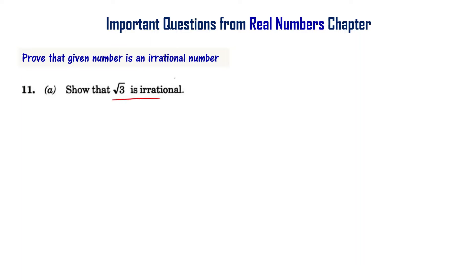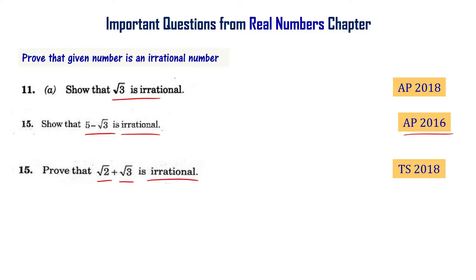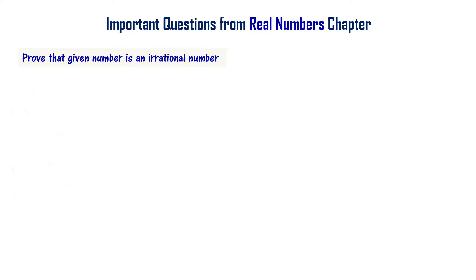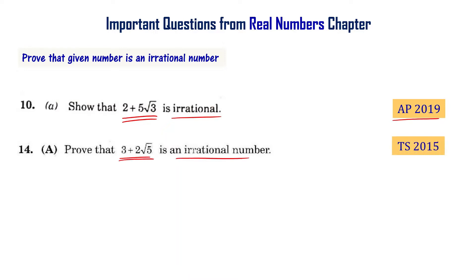Show that root 3 is irrational — AP final exam 2018. Show that 5 minus root 3 is irrational — AP final exam 2016. Prove that root 2 plus root 3 is irrational — Telangana final exam 2018. Prove that root 2 plus root 7 is irrational — Telangana final exam 2019. Prove that root 3 plus root 5 is irrational — AP supplementary exam 2016. Show that 2 plus 5 root 3 is irrational — AP final exam 2019. Prove that 3 plus 2 root 5 is irrational — Telangana final exam 2015.